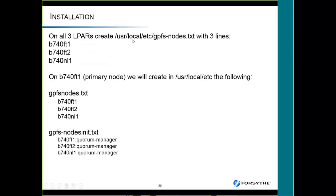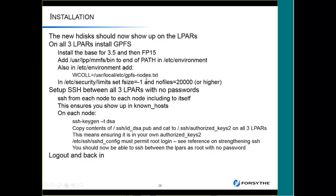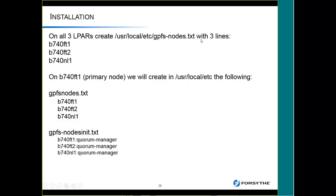Create a file on each of the server nodes listing the server names — this is your working collective file (gpfs-nodes.txt). On the primary node create another file, gpfsnodesinit.txt, which identifies these as quorum managers. This file is used in the cluster creation command. The nodes init file is created only on the primary; the working collective file is created on all three nodes since each uses it.